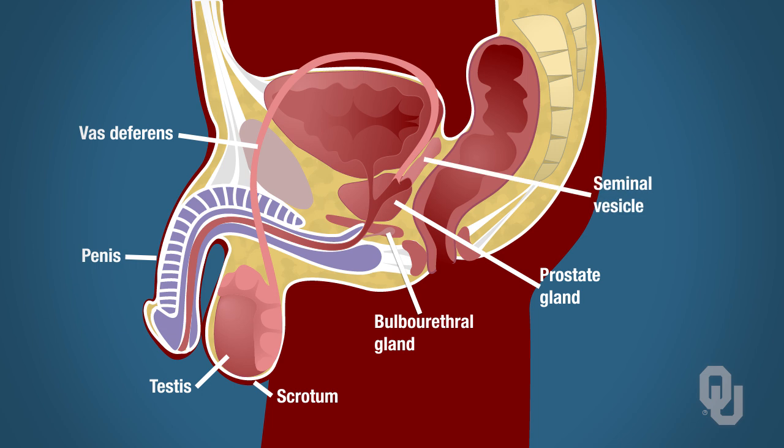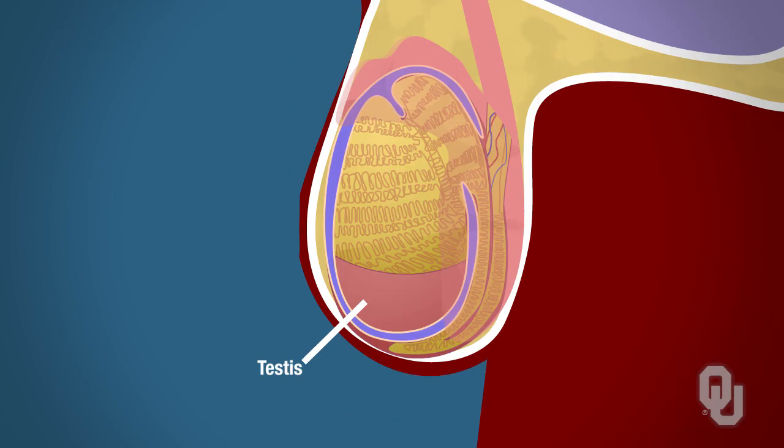You have to have a basic understanding of location in order to understand function and how all these structures work together. We will begin with the testes, the male gonad. This is a diagram of a longitudinal section through one testicle, so you can now see what's inside. Notice that the majority of the testicle is composed of seminiferous tubules. These tubules produce sperm via spermatogenesis. But how? Let's take a closer look.